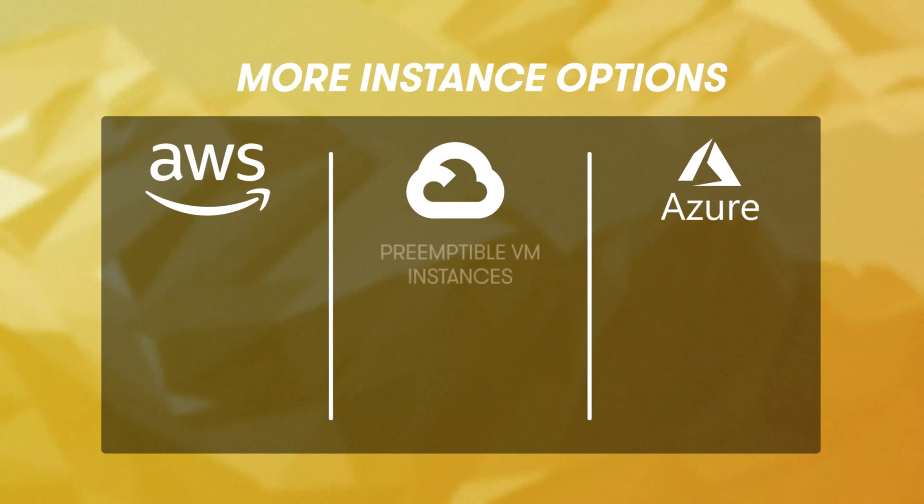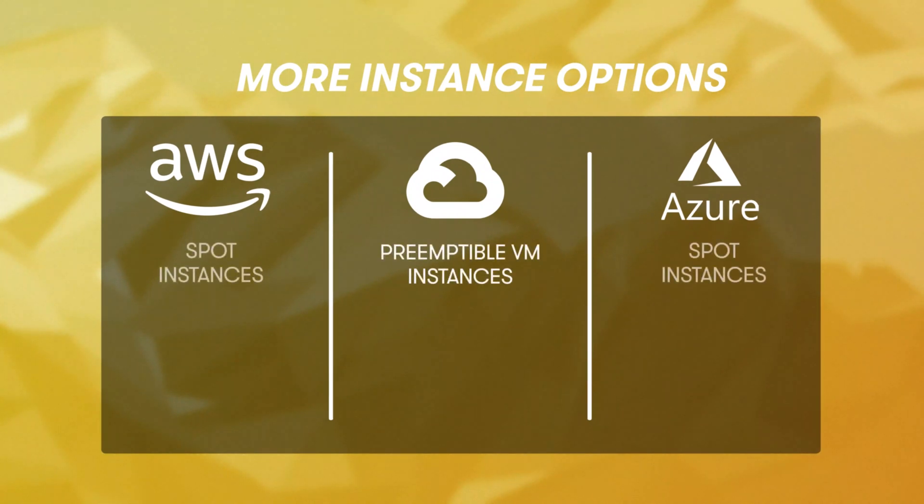Azure, AWS, and GCP have another class of VMs that provide a deep discount — up to 90% in some cases — but with a catch: they can be shut down at any time when the provider needs capacity for premium services. This is an excellent option for stateless and fault-tolerant applications that can be interrupted and resumed, or dev/test environments that don't need production-level availability. In GCP, these are referred to as preemptible VM instances. In AWS and Azure, these are referred to as spot instances.